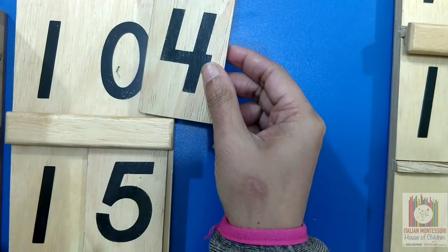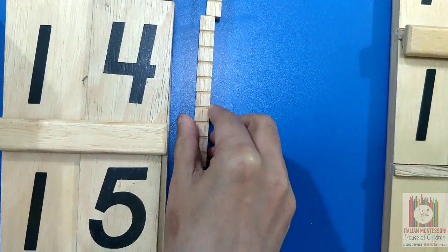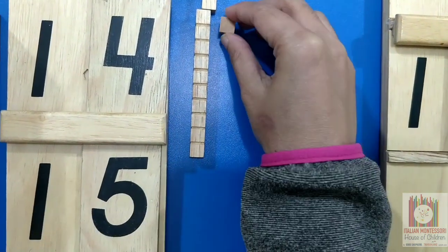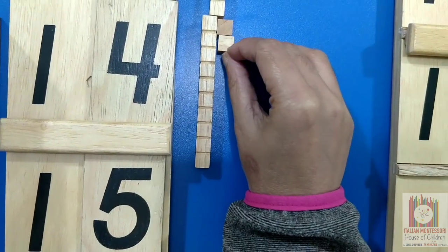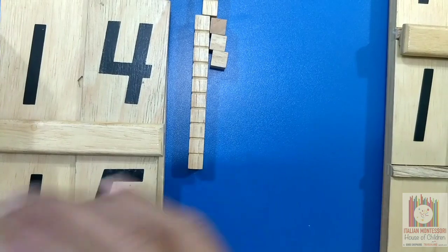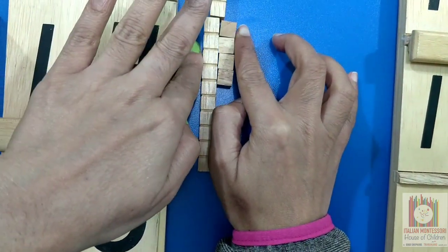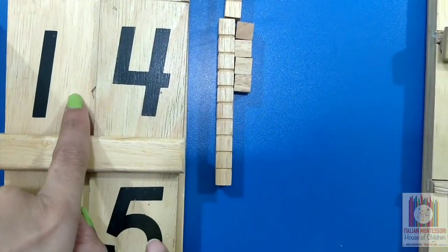10 and 4 makes 14. 10 and 4 units. 10 and 4 units makes 14. 14. 14 we have to write in this way.